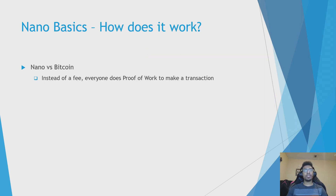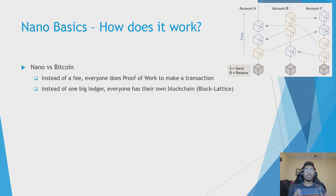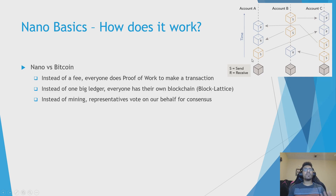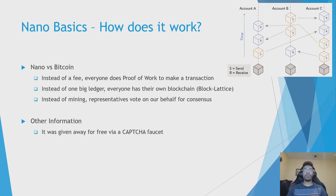So how does it work? Instead of a transaction fee, everyone does a small proof of work to make transactions. Instead of one big ledger where you have to line up transactions, everyone has their own blockchain, so I can send to you, you can send to me — we're not waiting on anybody. Instead of mining, representatives vote on our behalf for consensus, like a representative democracy. It was given away for free through a captcha faucet. Anyone can be a representative, and you can choose or change your representative at any time.